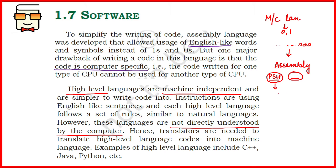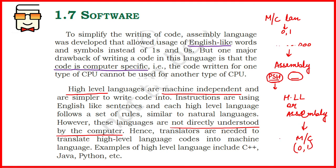That is why high-level languages came about. High-level languages do not contain any addresses or hard codings. They are written in a way that comprises English-like words, are easily understood by humans, and are independent of the type of machine they run on. This is the basic difference between all three language types. Both high-level and assembly languages need to be converted to machine language — zeros and ones — for the computer to understand them.